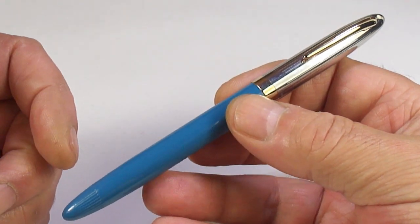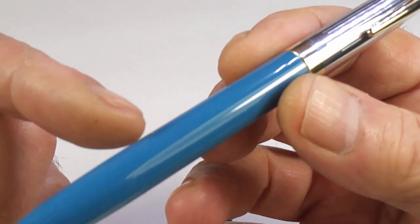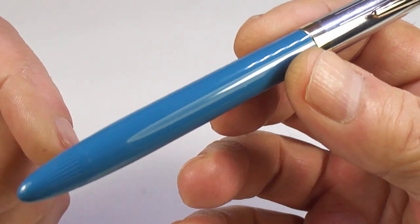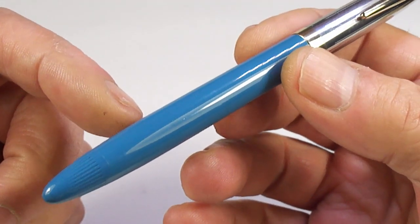As I said, this is the Sentinel fountain pen, the Snorkel. It comes in what I call aqua, although some people call it the pastel blue.